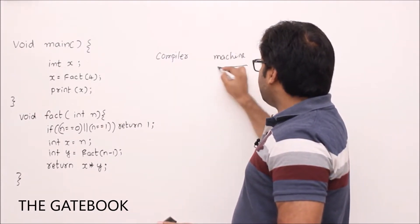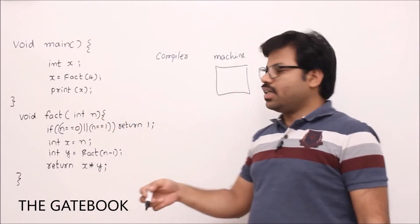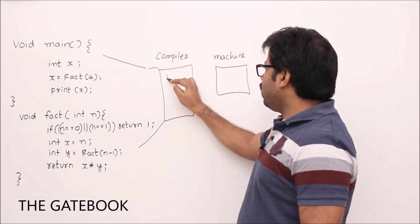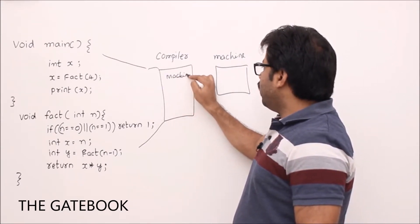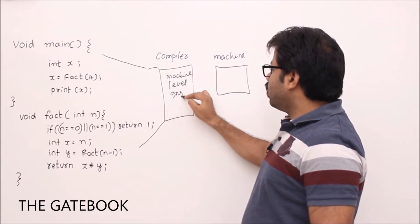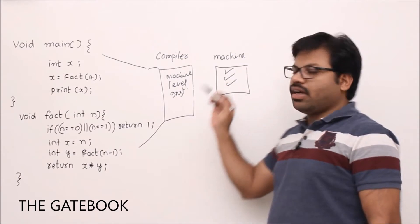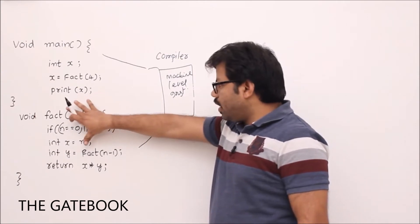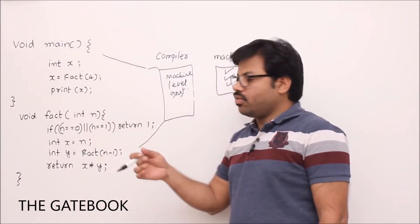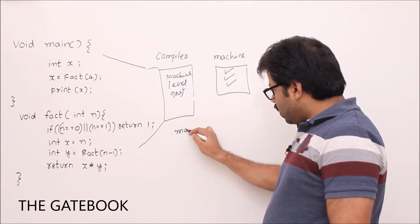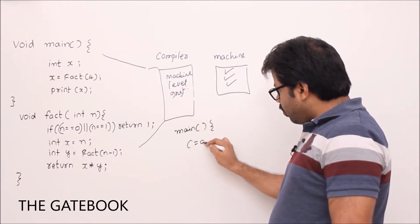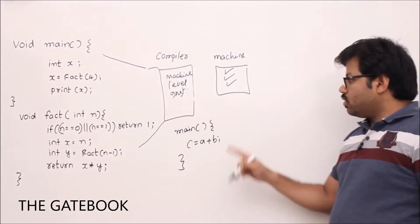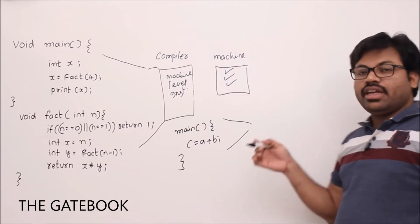The compiler is going to convert all instructions to machine-level instructions so that your machine can execute them. Now let's think about a small program — let's say there is a main program with instruction c = a + b. Even for this small line, to convert it into machine level, we need a lot of instructions.